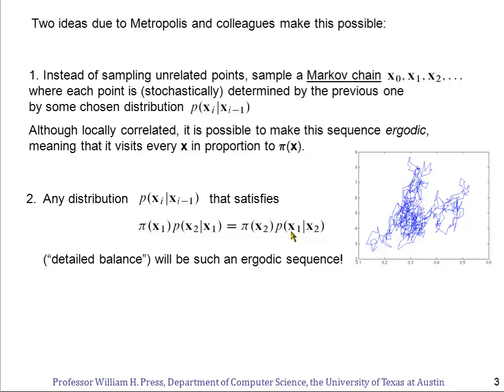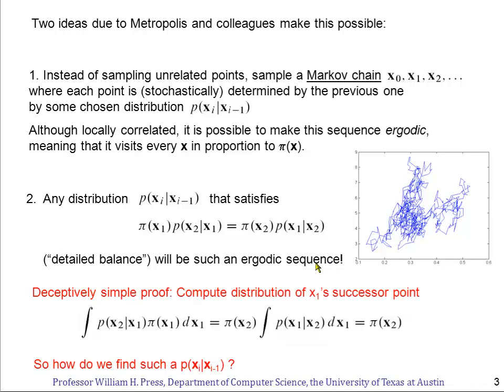Now it should not be immediately obvious to you why detailed balance implies an ergodic sequence. It's actually very deep. But it's one of these deep things that has a deceptively simple proof. In fact it's a one-line proof. Let me give it to you here. This of course leaves out all the technical details that actually make it a beautiful proof, but this will give you the idea.